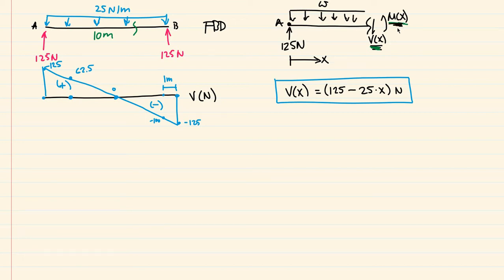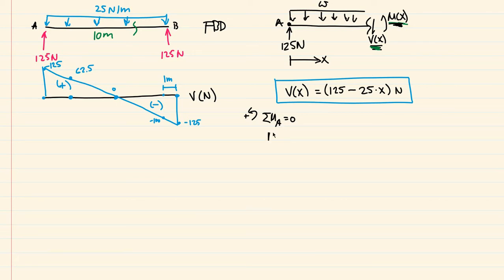Let's figure out the moment equation. I'm going to take the sum of moments about point A and set that equal to zero — that's going to help us solve for m(x). So, moment about A equals zero. Right off the bat, we have this positive m(x) value, which is our unknown.